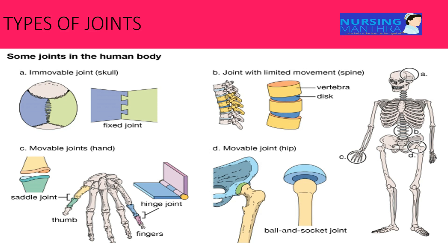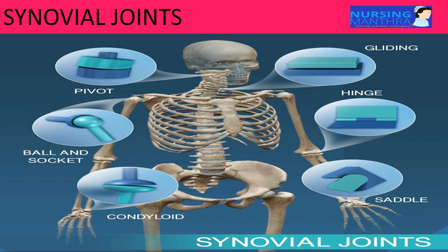Condyloid joints are freely movable joints that allow frictionless, painless movements - example: the wrist. These are the types of joints. Within synovial joints, there are fiber joints, ball and socket joints, condyloid, saddle, hinge, and gliding joint types.